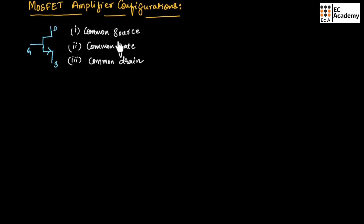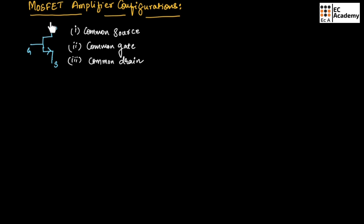In common source configuration, the source terminal is common between input as well as output, and the other two terminals will be the input terminal and output terminal. In common gate configuration, gate is common between input and output — meaning the gate terminal is connected to ground and the other two terminals act as input and output. In common drain configuration, drain is common between input and output.